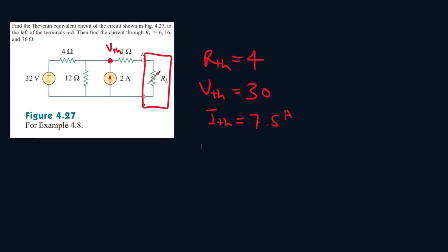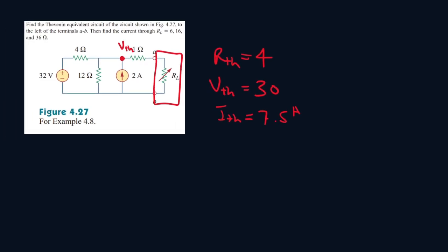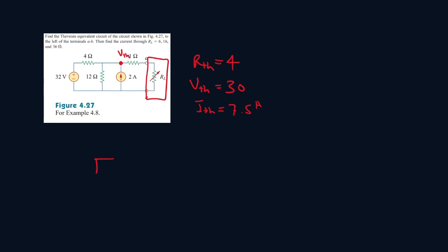Now what we can do now is write a Thévenin circuit. So we'll have our voltage here. Then our resistor. And then our resistor load which is this portion. So since we're including a resistor load. Our current will be a different value. If we didn't have the resistor load. Then our current will be our Thévenin current here.